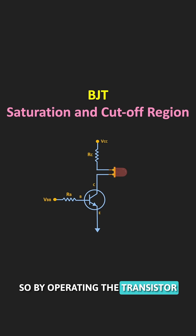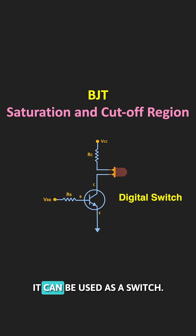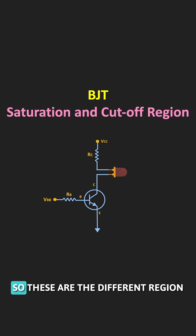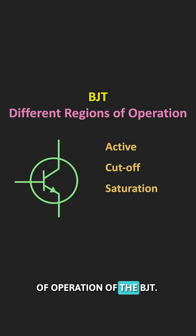By operating the transistor in the cutoff and saturation regions, it can be used as a switch and in digital circuits. These are the different regions of operation of the BJT.